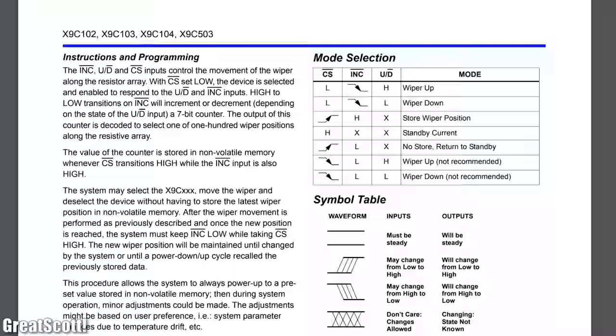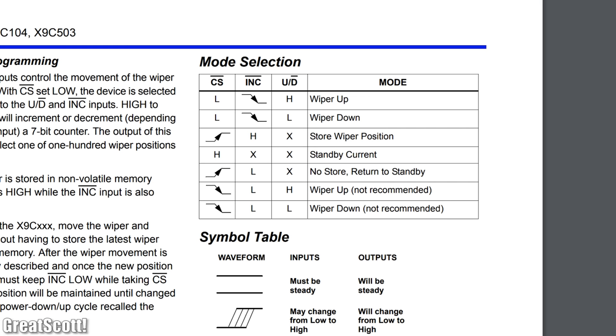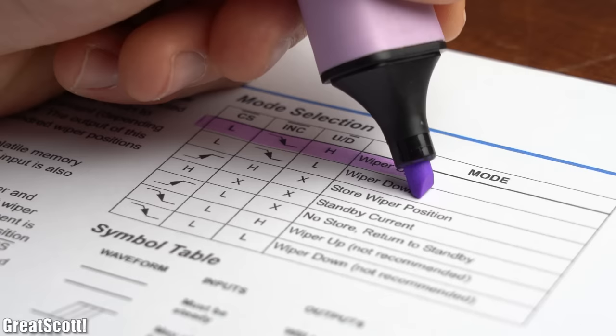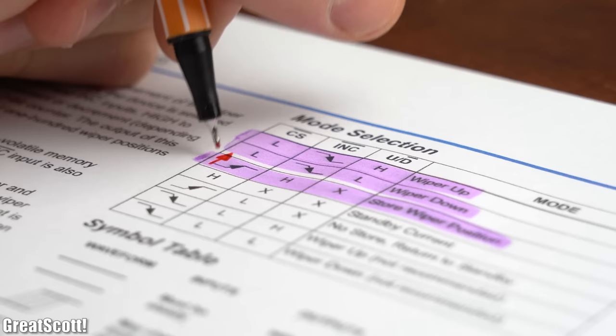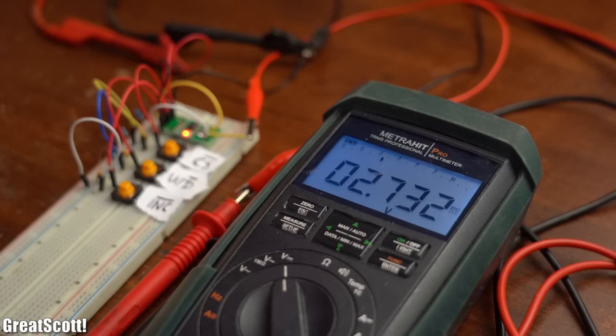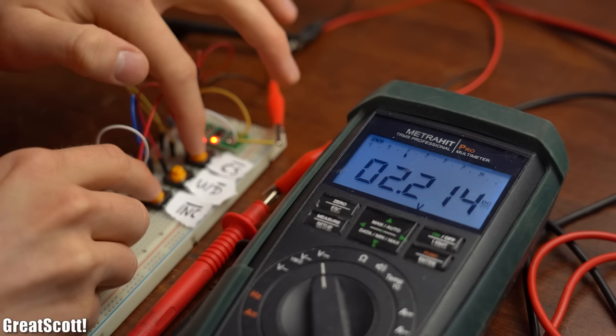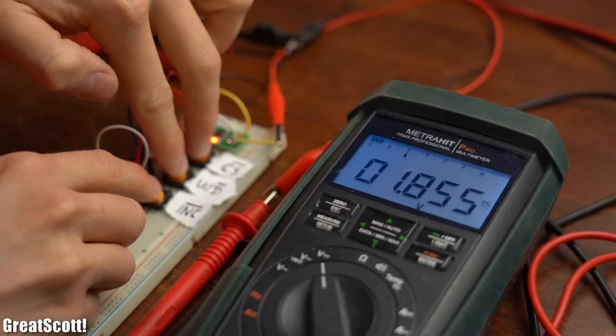And according to this mode selection table, that should be super simple to do. You have to keep chip select low and depending on whether the up down pin is connected to VCC or ground, the wiper either moves one step up or down as soon as the increment pin is being pulled low. So you basically only have to keep those two lines in mind, and maybe this lower one as well, in which you pull the chip select pin high in order to save the wiper position in the memory of the IC so that after a new power up it still remains in that position. And with the theory out of the way I tried out the just learned push button combinations, and as you can see here I was able to increase and decrease the output voltage without a problem.